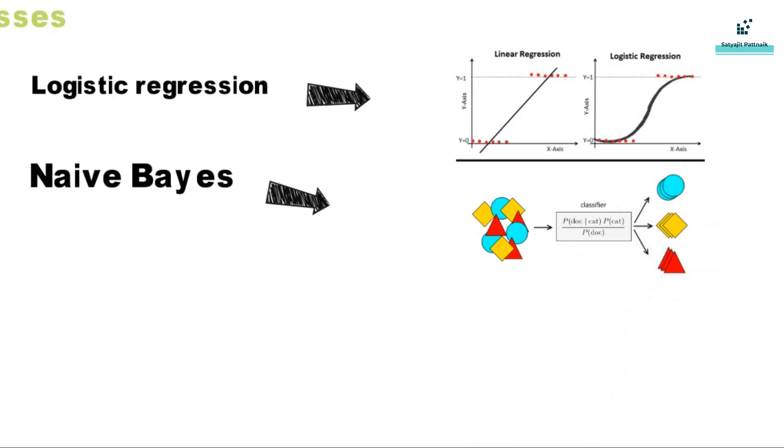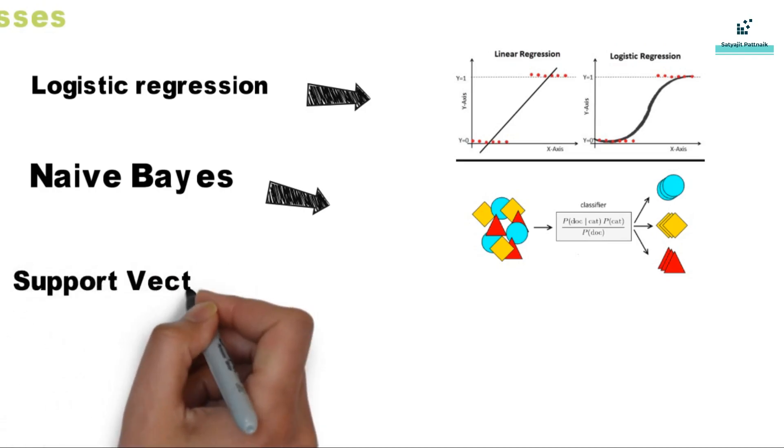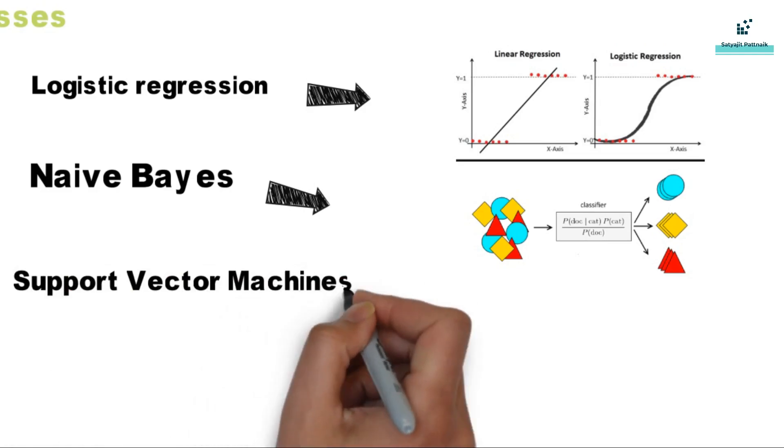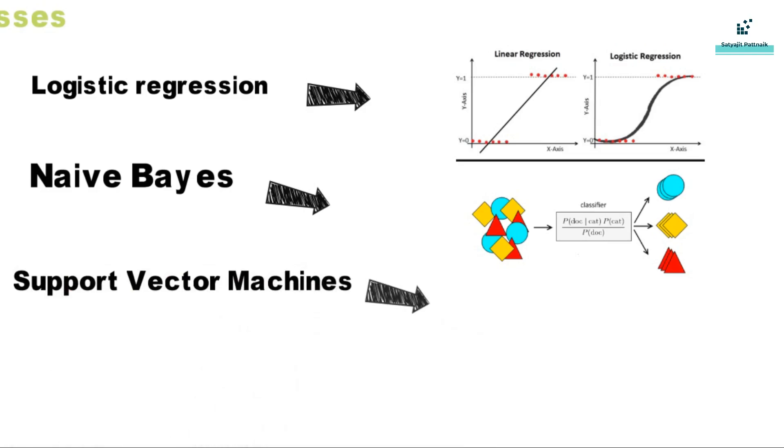The next one is support vector machines. It is a supervised classification technique that carries an objective to find a hyperplane in n-dimensional space that can distinctly classify the data points.